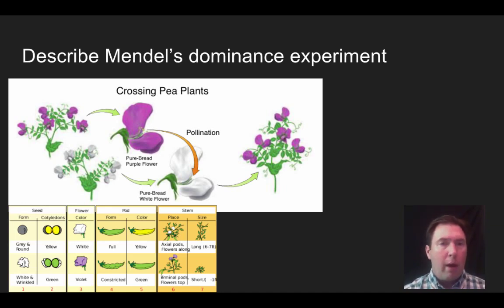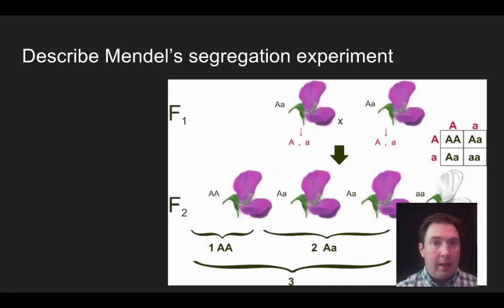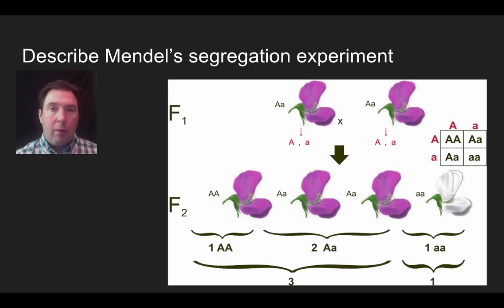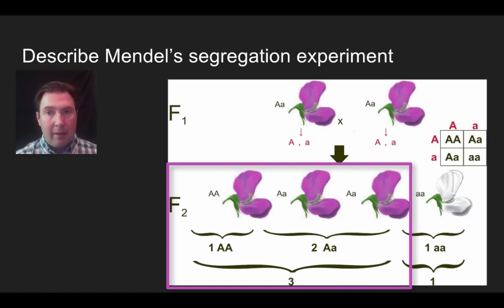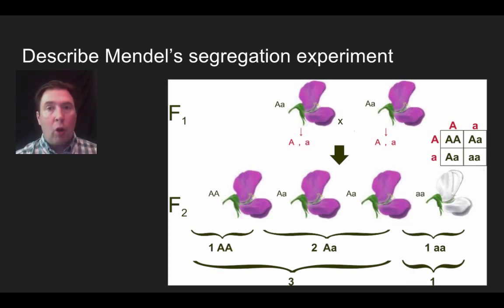This leads to the next question: what happens when we take these offspring — these purple results from the cross of purple and white — we take that next generation, which we call the F1 generation, and we cross that? When Mendel crossed purple with purple from the F1, 75% of the next generation ended up being purple and 25% ended up being white. And this led to the idea of the law of segregation.